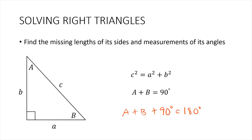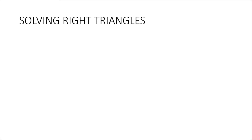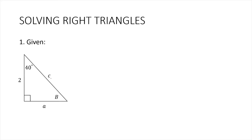Now let's take a look at the first problem. We are asked to solve this right triangle. We need to find side A, the hypotenuse C, and angle B. Given here is side B and angle A, which is 40 degrees.